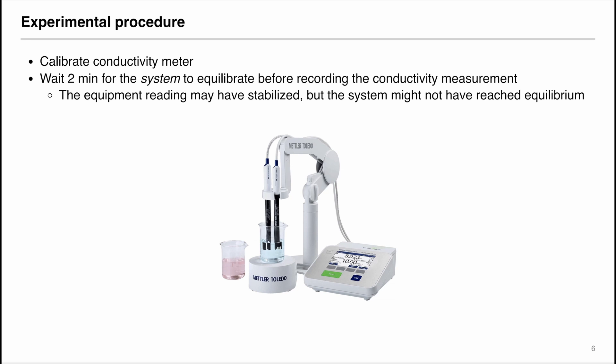The experimental procedure is actually quite simple. You will first calibrate the conductivity meter that will be provided to you, where it digitally displays the conductivity κ. You will immerse the conductivity probe in your solution. However, you want to make sure that the conductivity probe is not touching the edge of the container or the stir bar, or else it will screw up the measurement.